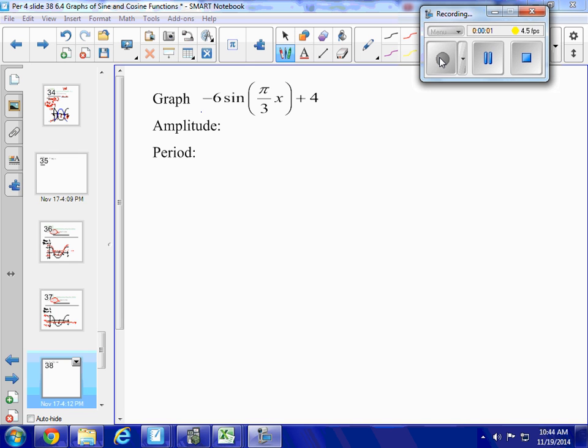So I want to graph this sinusoidal function, which has this part right here, which I've done already, but it also has a k there at the end. a times f of b times x minus h plus k. The k is outside the function, so I know it's going to affect my vertical values.